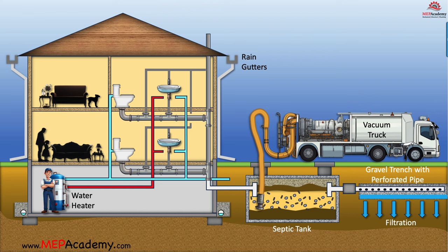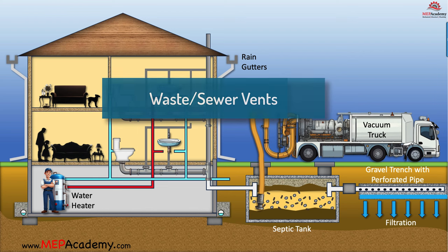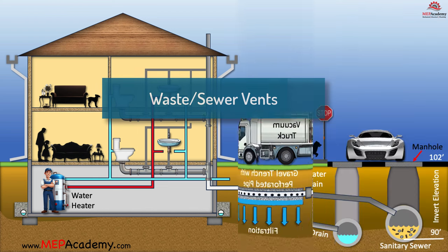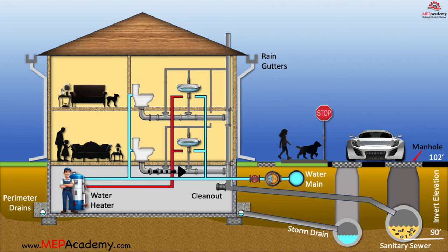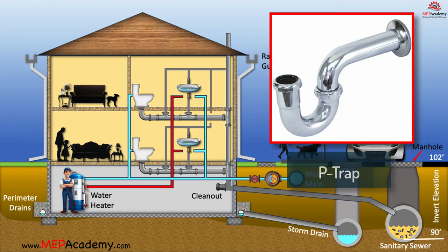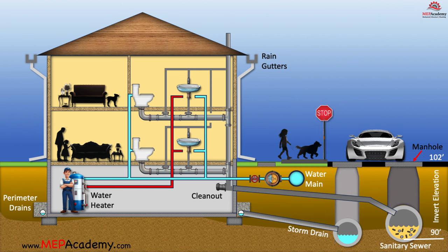Now, let's delve into venting. For the effective operation of these fixtures and drains, a well-designed venting system is essential. When a toilet is flushed, the water's downstream flow induces negative pressure. Vents play a crucial role in equalizing this pressure change, preventing issues such as gurgling and the siphoning out of water in P-traps. This prevention is vital to avoid the infiltration of sewer gases into your home. These vents draw in air from the roof, and it's imperative to keep them clear of birds' nests and debris, or complications are guaranteed.